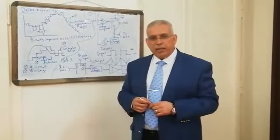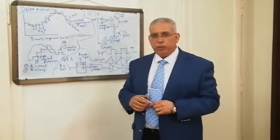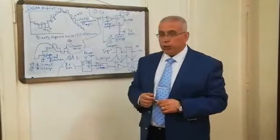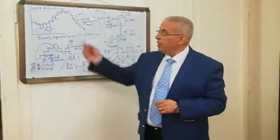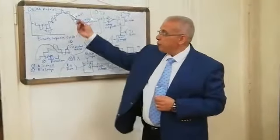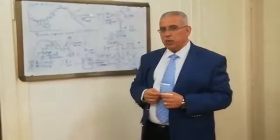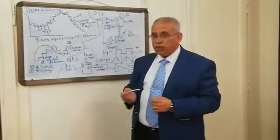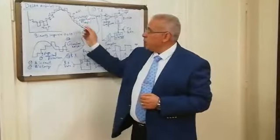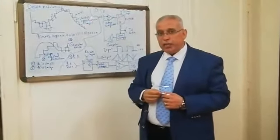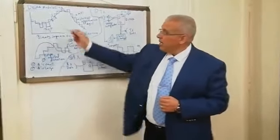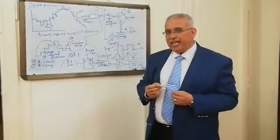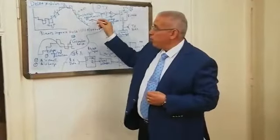Welcome back, dear students. Today I'm going to present and discuss a new lecture about a new modulation technique called Delta Modulation. This is the simplest form of transforming an analog signal into digital and vice versa. In this type of modulation, the incoming message signal M is over-sampled at a rate much higher than the Nyquist rate, in order to increase the correlation between adjacent samples.